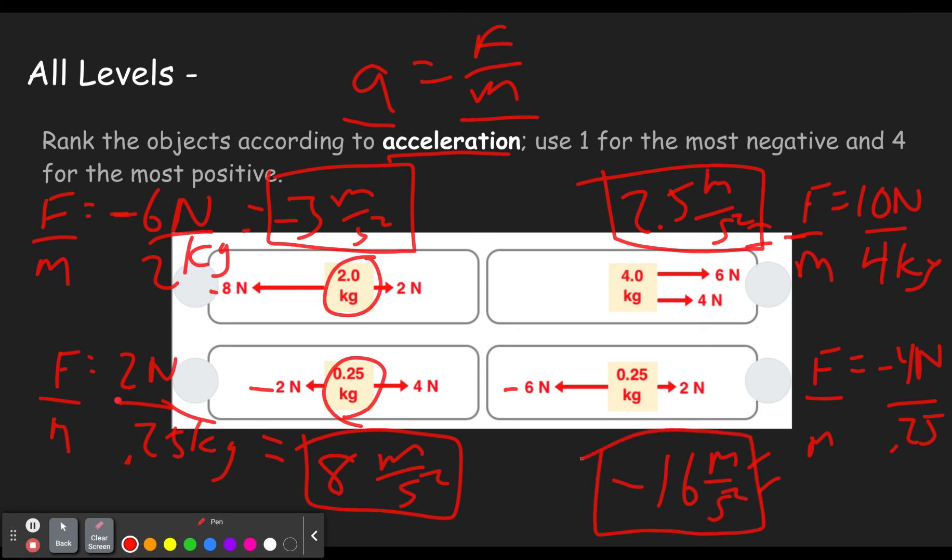So if you put these on a number line or look at them on a number line, this would be the most negative. This would be the second most negative. This would be the third most negative. And this would be the fourth, the most positive. So you can see everything changed when we divided by the mass because the things that are lighter accelerate faster, even though there might not be as much force on them.